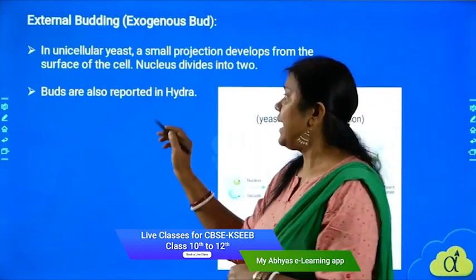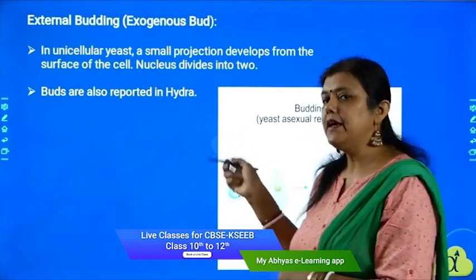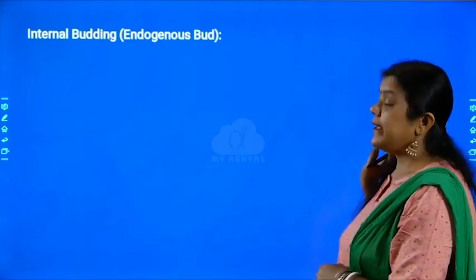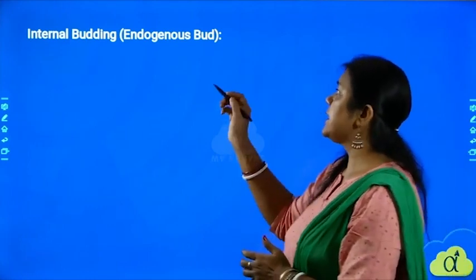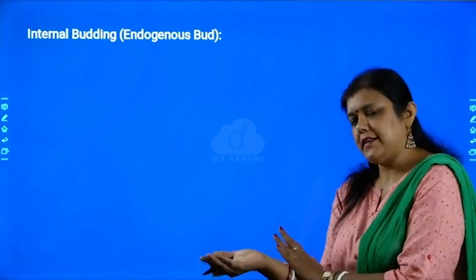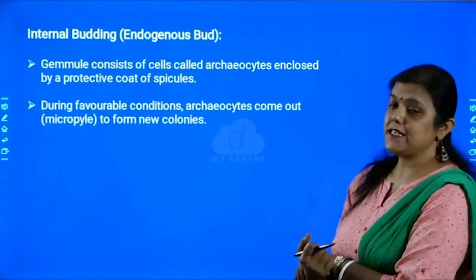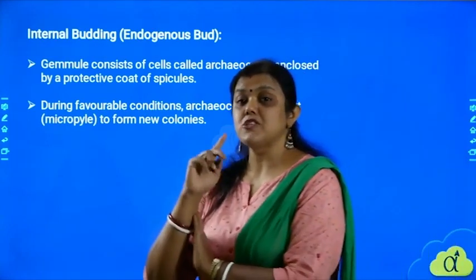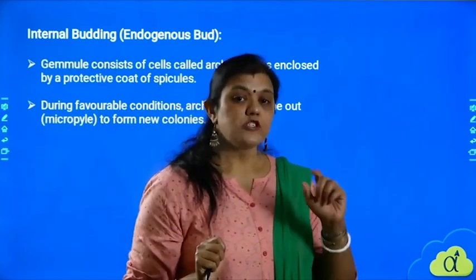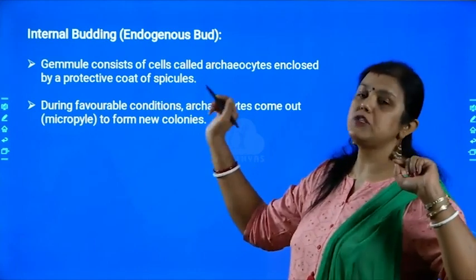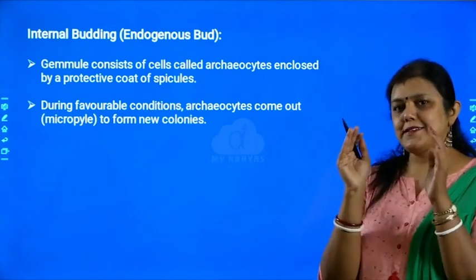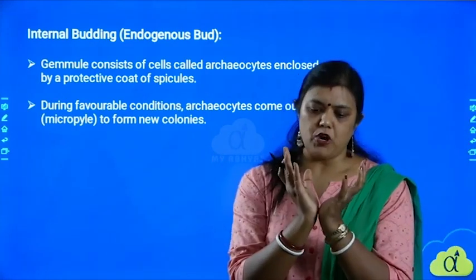Budding is also seen in hydra. Similarly, internal budding is called endogenous bud — exo is external, endo is internal. In this case we call it gemmule formation. Many times in competitive exams they ask about gemmule, so you should remember: gemmule is nothing but endogenous or internal bud formation.